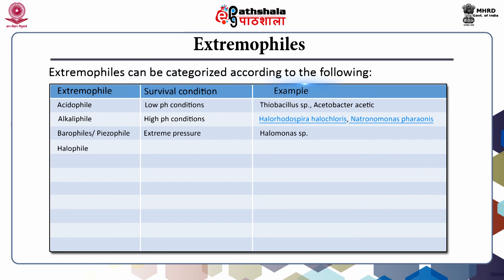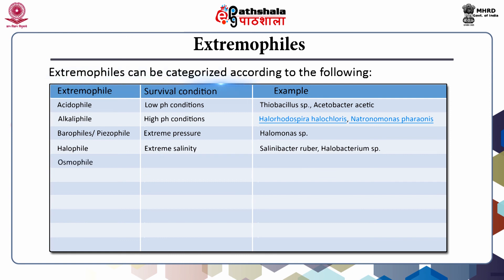Halophiles are extremophiles able to survive under extreme salinity — examples include Salinobacter ruber and Halobacterium species. Osmophiles are microbes capable of growth in environments with high sugar concentration, and Saccharomyces species are a wonderful example of osmophiles.